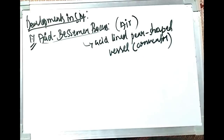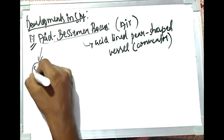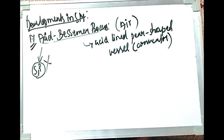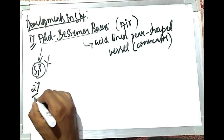The acid Bessemer process is one in which air is blown into an acid-lined, pear-shaped vessel also known as a converter. This converter is lined with acidic refractories. There is no external heat supplied. The main disadvantage of the acid Bessemer process is that sulfur and phosphorus are not removed — control of sulfur and phosphorus was not possible.